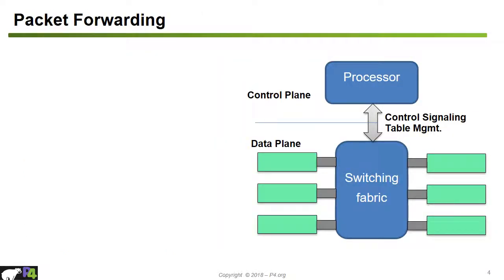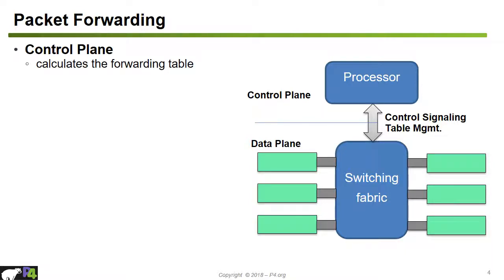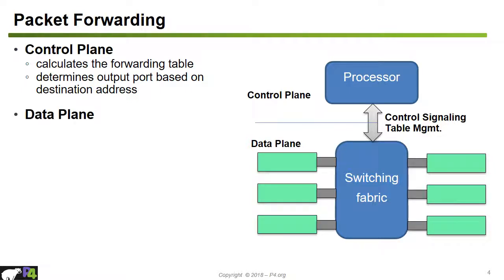If we look under the hood of a typical data plane processing element such as a switch, we see two different elements. One is the control plane, which is implemented by a normal processor running in the switch. The job of the control plane is typically to calculate the forwarding table, which determines the output port based on the destination address of the packet the switch is currently processing.